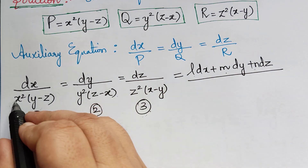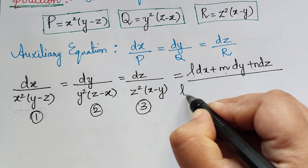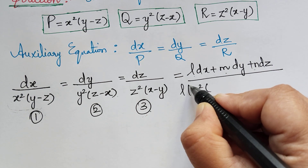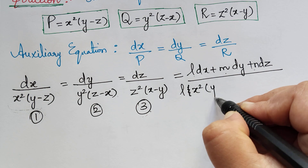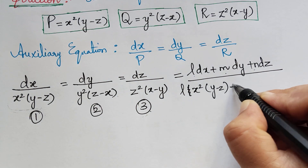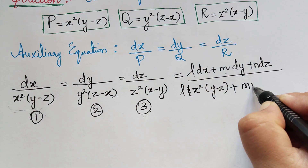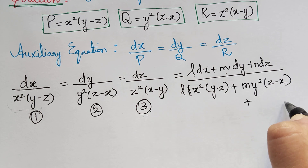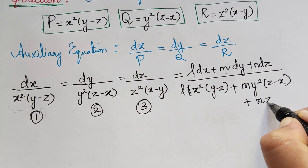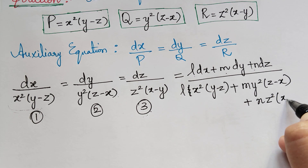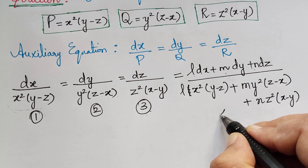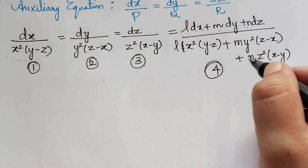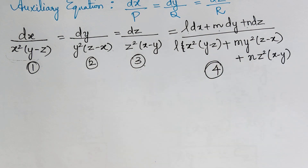For the denominator of the fourth ratio, we multiply L with x squared times y minus z, plus M multiplied with y squared times z minus x, plus N multiplied with z squared times x minus y. We now need to choose the multipliers in order to make this denominator equal to zero.